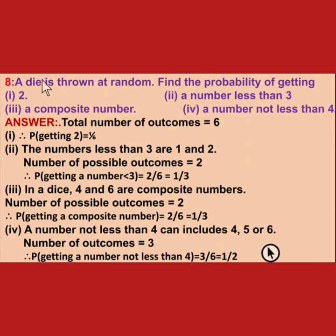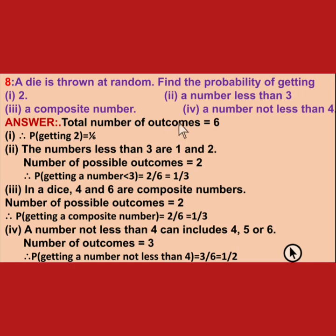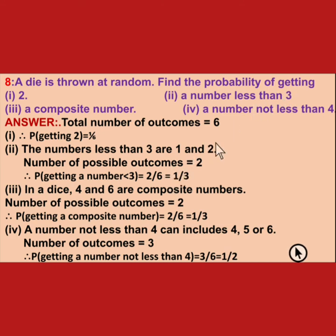Next is eighth. A die is thrown at random. Find the probability of: first, getting 2; second, a number less than 3; third, a composite number; fourth, a number not less than 4. When a die is thrown, total outcomes are 1, 2, 3, 4, 5, and 6 — so 6 outcomes. There is only one 2, so probability of getting 2 is 1 upon 6. Numbers less than 3 are 1 and 2, giving 2 favorable outcomes, so probability is 2 upon 6, that is 1 upon 3.